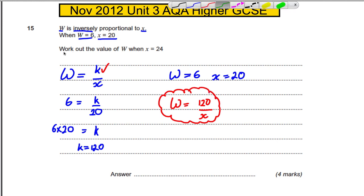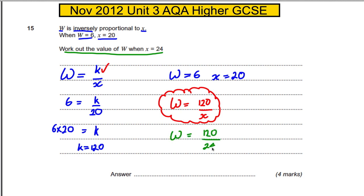For this part, work out the value of W when X is 24. W is therefore 120 over 24 — just tap it into your calculator and you get 5. W is therefore 5, for probably the four easiest marks on the paper.